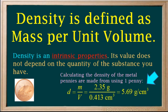If we calculate the density of the metal pennies are made from using one penny, density equals mass divided by volume, which is 2.35 grams divided by 0.413 centimeters cubed, which works out to 5.69 grams per centimeter cubed.